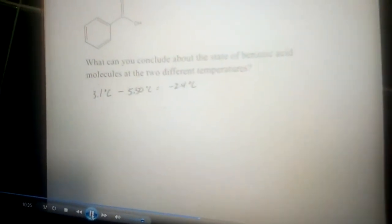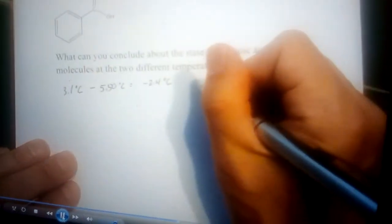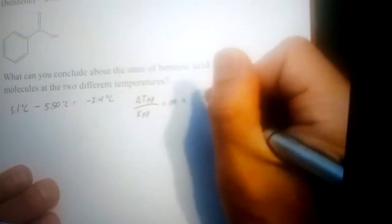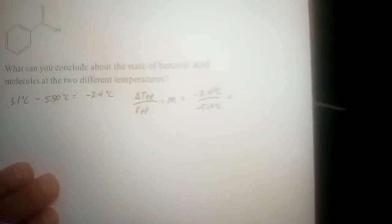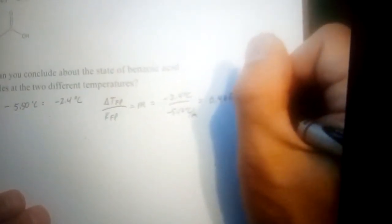We know that allows us to calculate molality because we have the constants. If I rearrange my freezing point equation, the temperature change divided by the constant equals molality. That's minus 2.4 degrees C over minus 5.12 degrees C per molal. Degrees C cancel out. This gives us 0.46875 molal as the concentration at the freezing point.